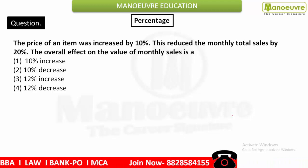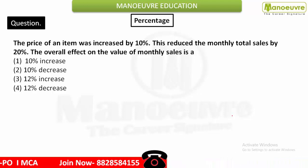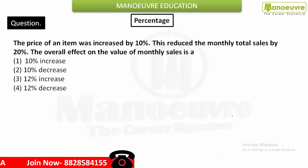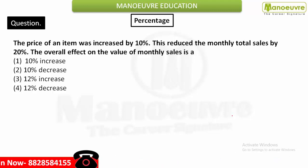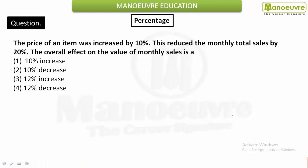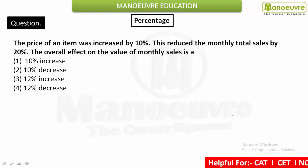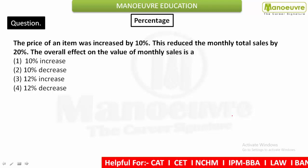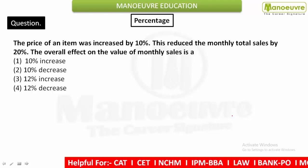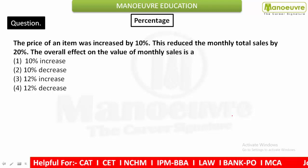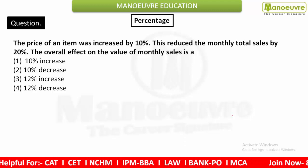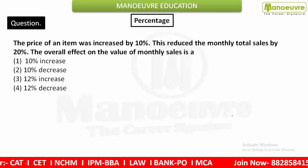We can solve this using the traditional method where the basic formula is Price × Consumption = Expenditure. The second method I'm going to use is a shortcut where price, consumption, and expenditure play no role — you can directly find the answer.